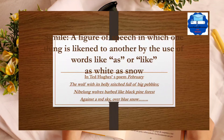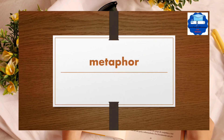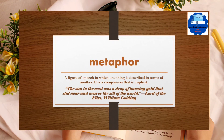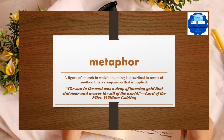Metaphor is a figure of speech in which one thing is described in terms of another. It is a comparison that is a little bit implicit as compared to simile, where two things are compared explicitly. In Lord of the Flies by William Golding, the sun is compared with a drop of burning gold. This has created a special effect in his writing.